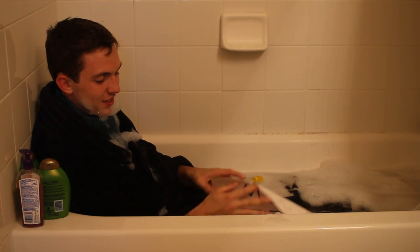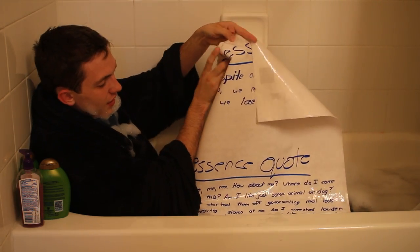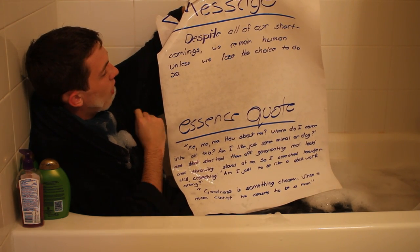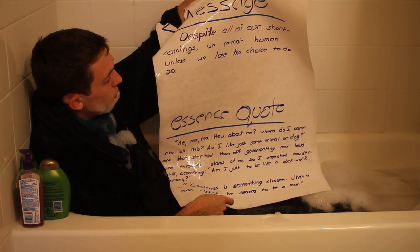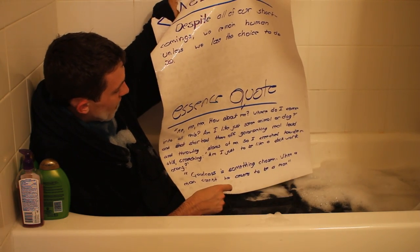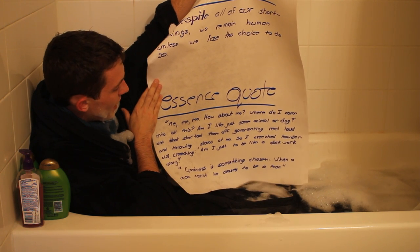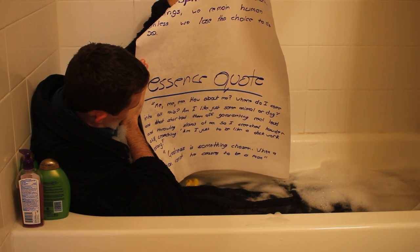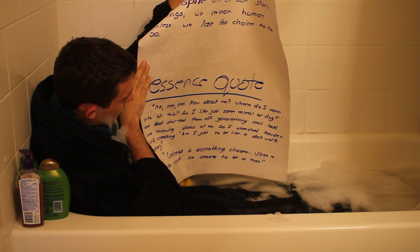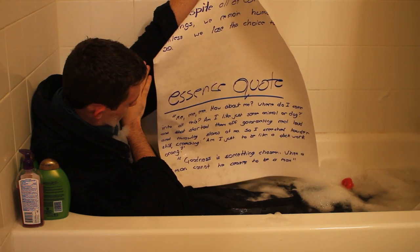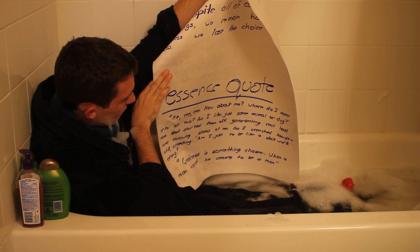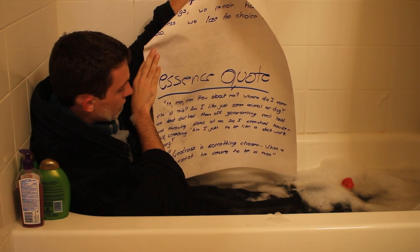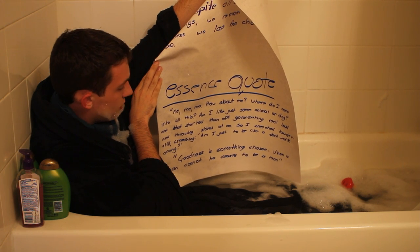The next thing on our list is the message and the essence quote. The message is that despite all of our shortcomings, we remain human unless we lose the choice to do so. The essence quotes are: 'Me, me, me — how about me? Where do I come into all this? Am I like some animal or dog? Am I just to be like a clockwork orange?' As well as: 'Goodness is something chosen. When a man cannot choose, he ceases to be a man.'